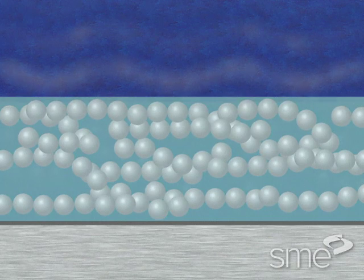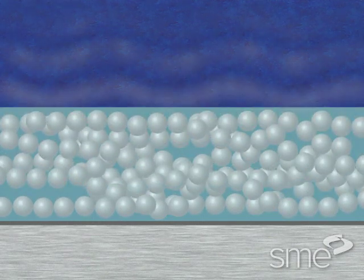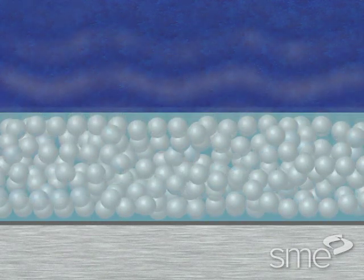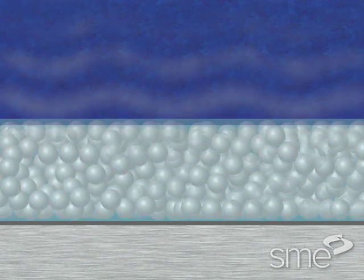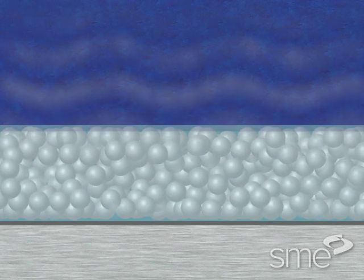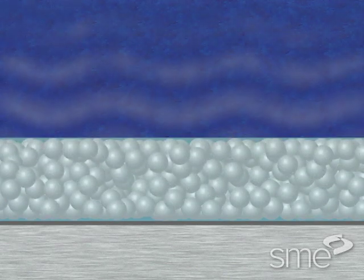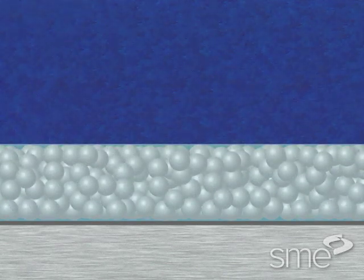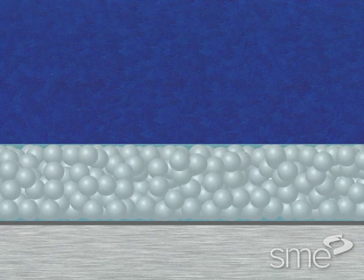Cross-linking is a process in which a polymer reacts with another chemical, called a cross-linker, to form larger polymer chains. These chains link and bundle together with other polymer chains to produce an extremely strong bond.